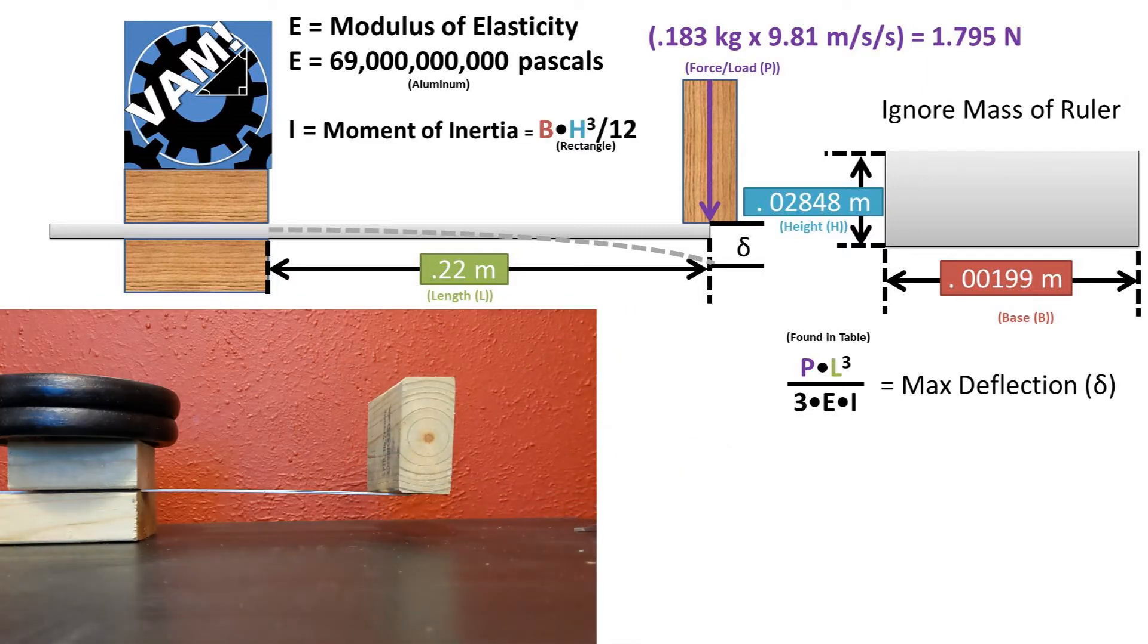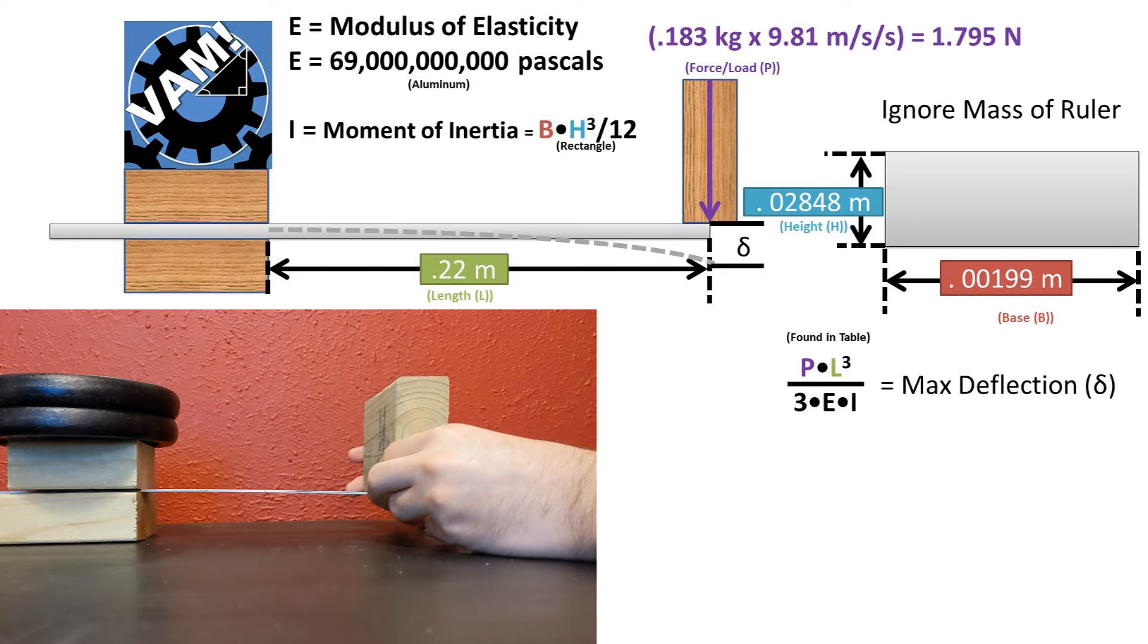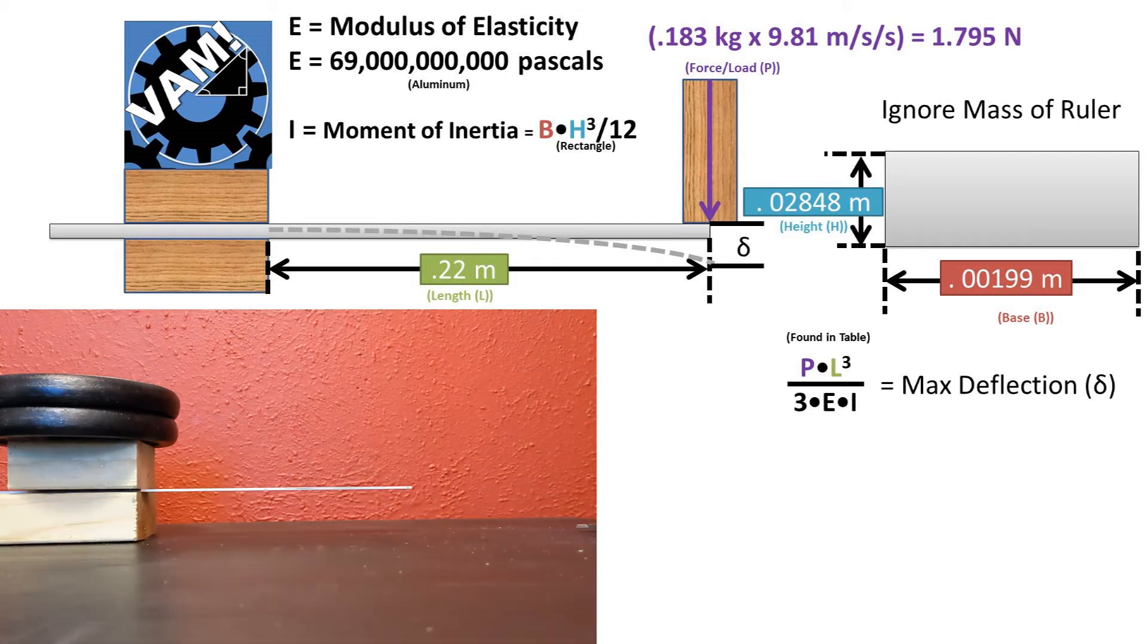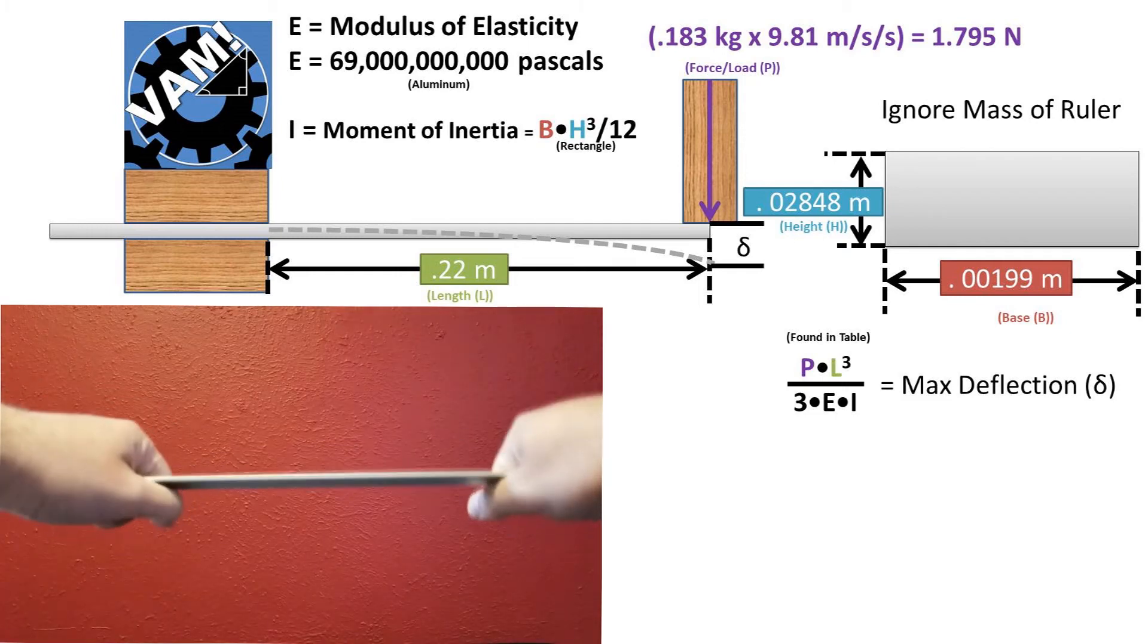We next need to find the planar moment of inertia for our rectangular cross-section. We could use calculus, or we could look it up in a table. We get that the moment of inertia is the base times the height cubed divided by 12. So basically, the planar moment of inertia is the resistance for an object with a given cross-section to bend.